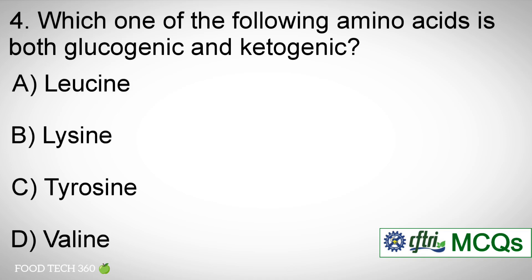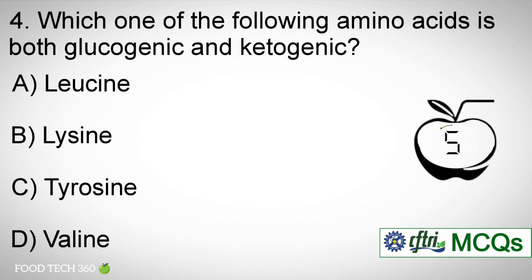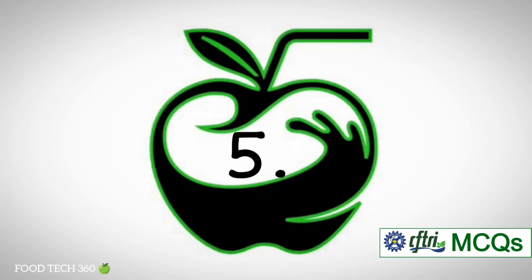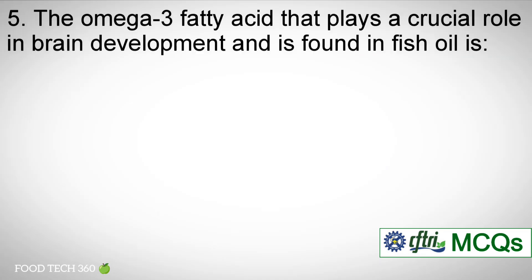Question number four: which one of the following amino acids is both glucogenic and ketogenic? Options: a) Leucine, b) Lysine, c) Tyrosine, d) Valine. Correct answer: c) Tyrosine.